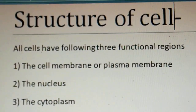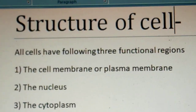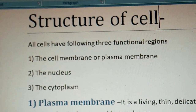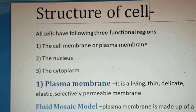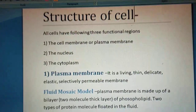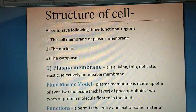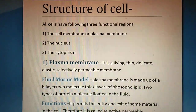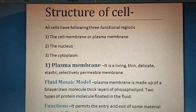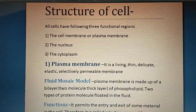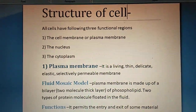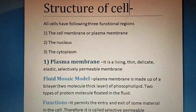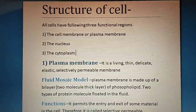Dear children, this is Sunita Mishra. Today I am going to continue with the cell chapter. The next topic is the structure of the cell. All cells have the following three major functional regions: the cell membrane or plasma membrane, the nucleus, and the cytoplasm. First, we will discuss about the plasma membrane.